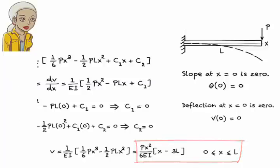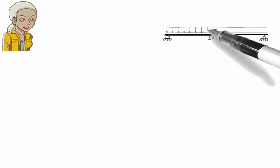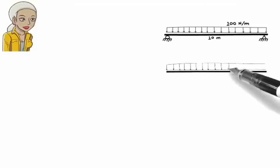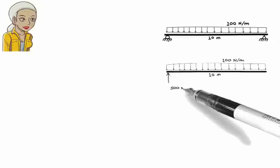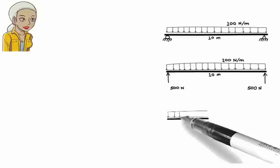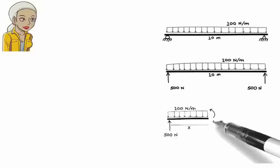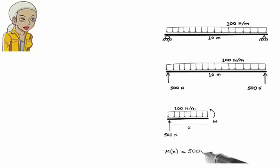Before wrapping up this lecture, let's look at another example. Here is a simply supported beam subjected to a uniformly distributed load. Assume the beam has a constant ei. Formulate a deflection equation for the beam. The moment equation for the beam is, mx equals 500x minus 50 times x squared.